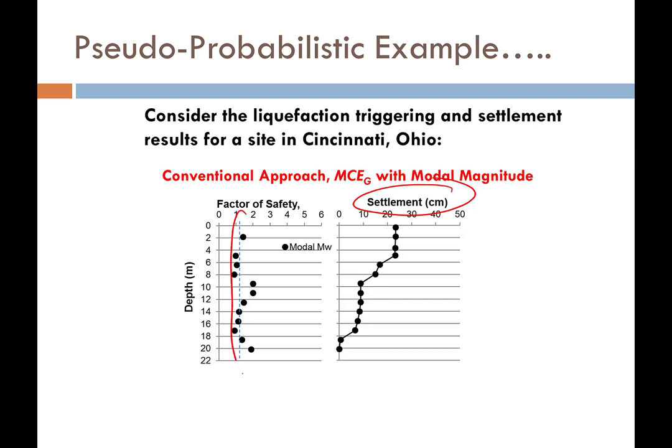Using 0.07g with a 7.7 magnitude, when they analyzed liquefaction triggering and the resulting free-field volumetric strain settlement, this is what they predicted using that pseudo-probabilistic method. The factor of safety of 1.2 boundary showed predicted settlements on the order of about 23 cm — about 10 inches, just under a foot. That was determined to be unacceptable, and the engineers were recommending to the owner that ground improvement needed to be installed at this very large industrial site, increasing the project cost by tens of millions, if not hundreds of millions of dollars.